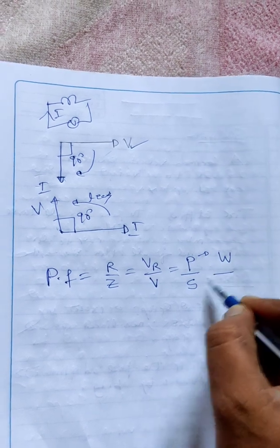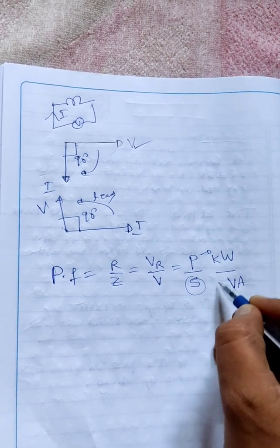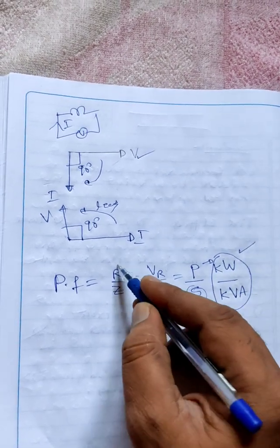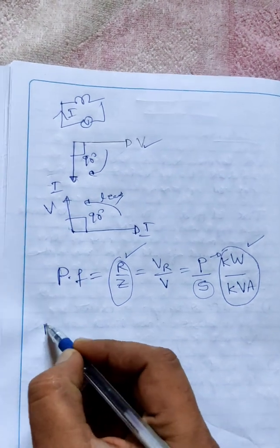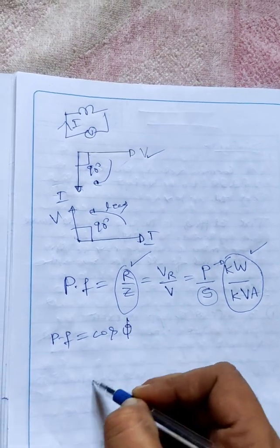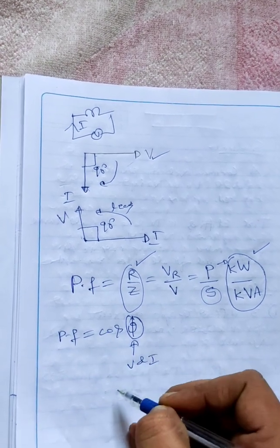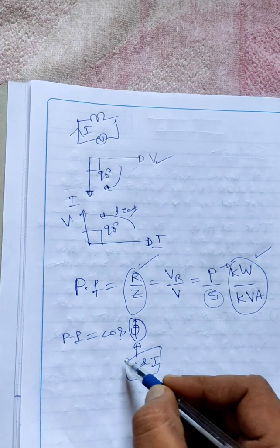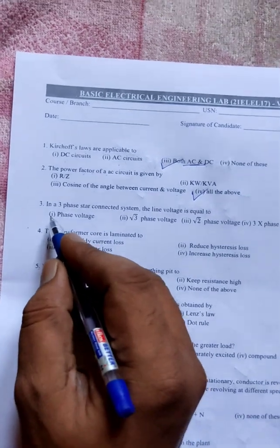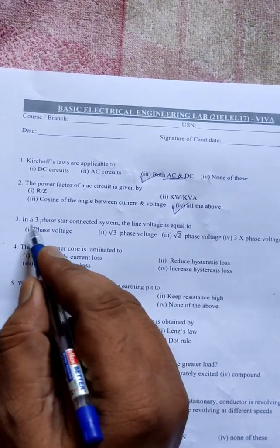We can also find power factor using power relations: P by S. P is active power with unit watts, and S is apparent power with unit volt-ampere. For higher ratings it will be kilowatt and kVA. Power factor is also expressed as cos theta — the cosine of the angle between voltage and current. So all of the above is correct.